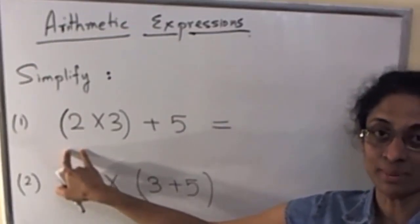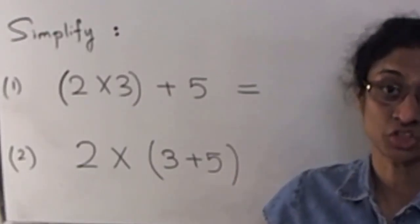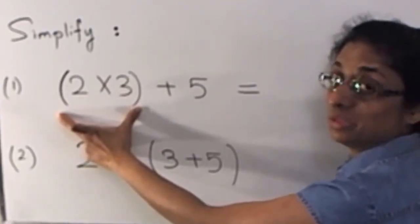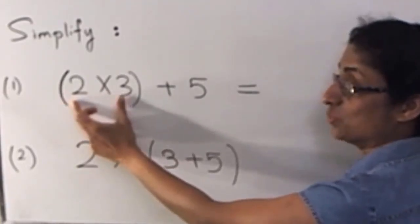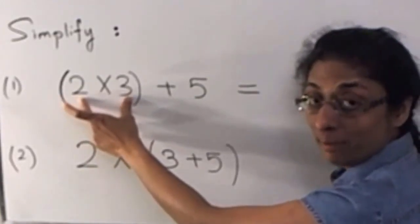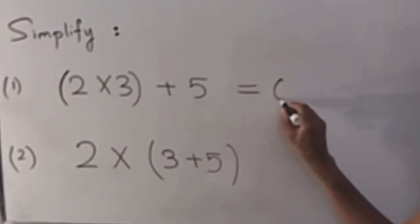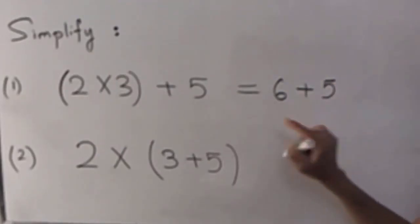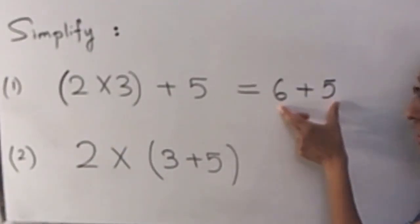There are instructions built into the expression. When you see parentheses, that means you look at the part of the arithmetic expression inside the parentheses first. Here, 2 times 3 is inside the parentheses. As you know, 2 multiplied by 3 gives you 6, and then we write the rest: 6 plus 5.